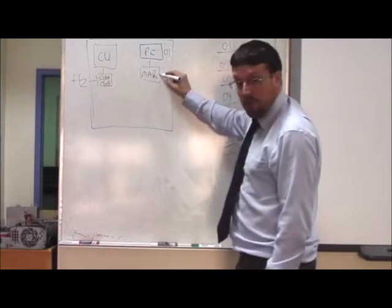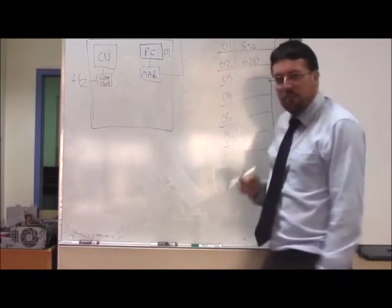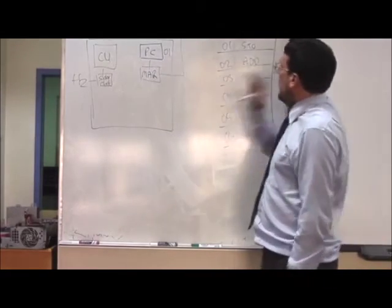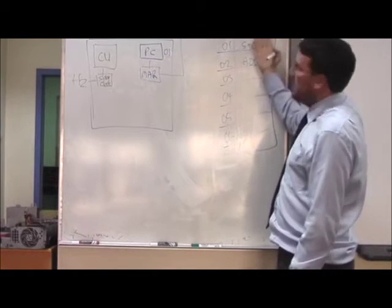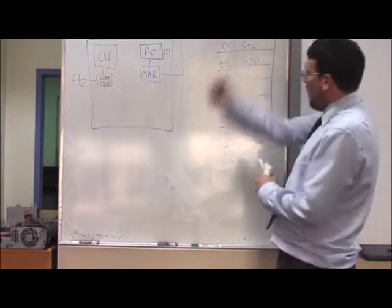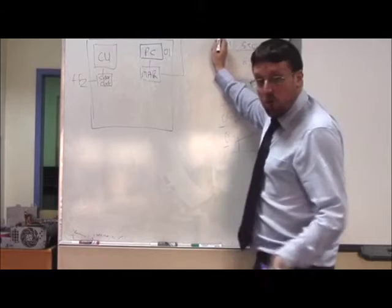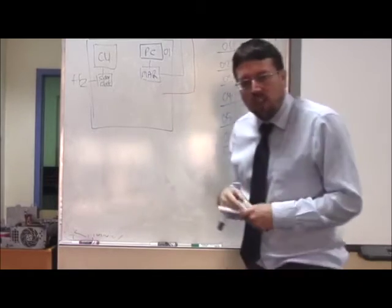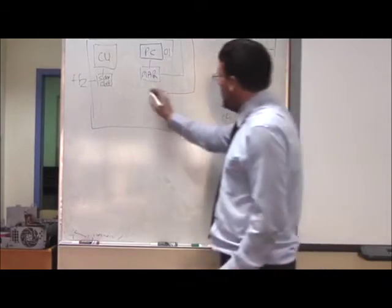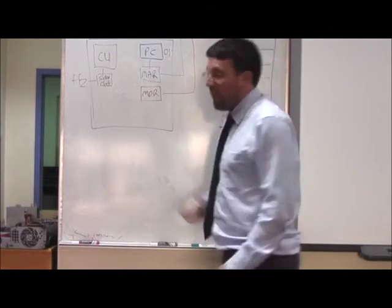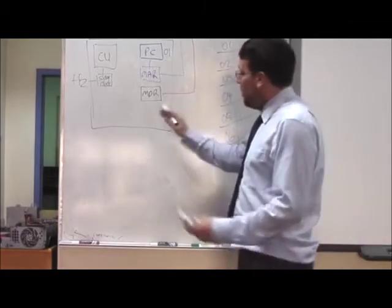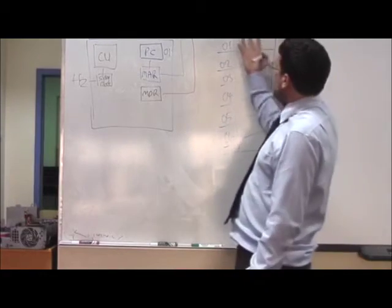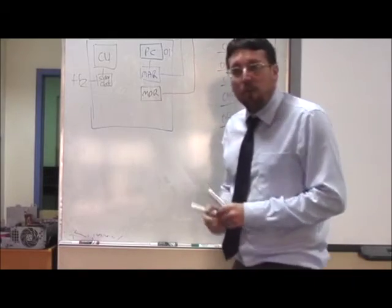That address needs to travel from the memory address register across to main memory so we can fetch the instruction. Main memory receives that address, finds the instruction at address 00, and that instruction travels back from main memory along a different route, ending up in a different register called the MDR — the memory data register. It's a register used to store data, and an instruction is a type of data. So we've just received an instruction from main memory and it gets stored in the MDR before it moves on.